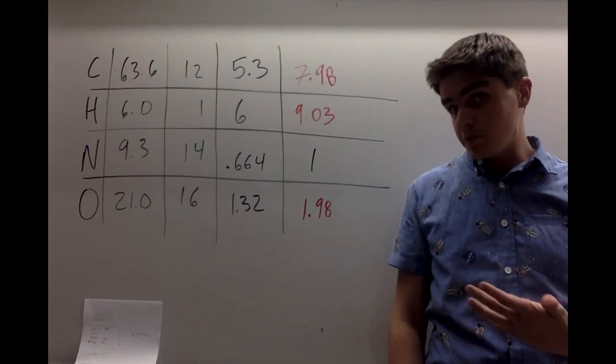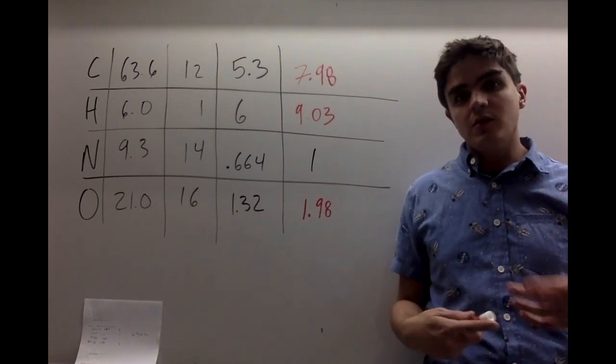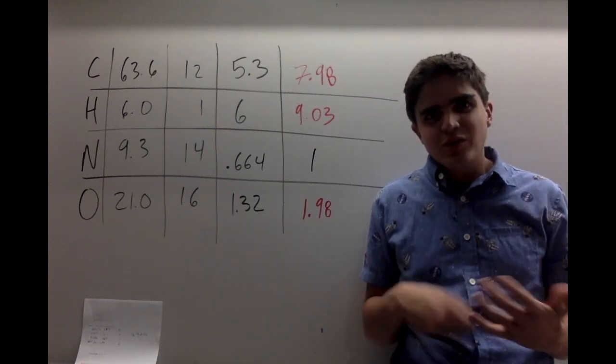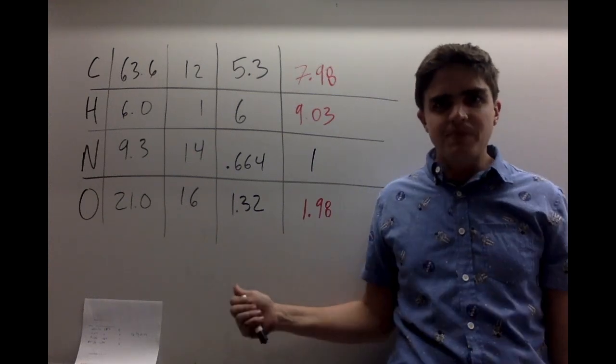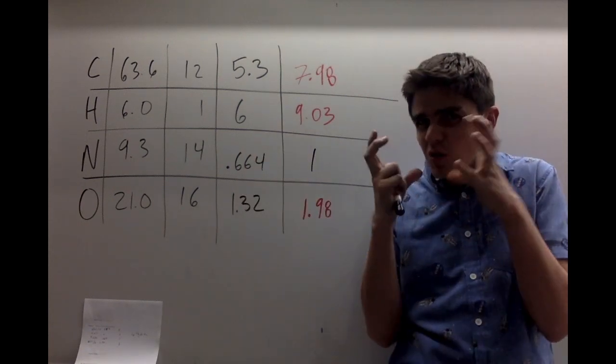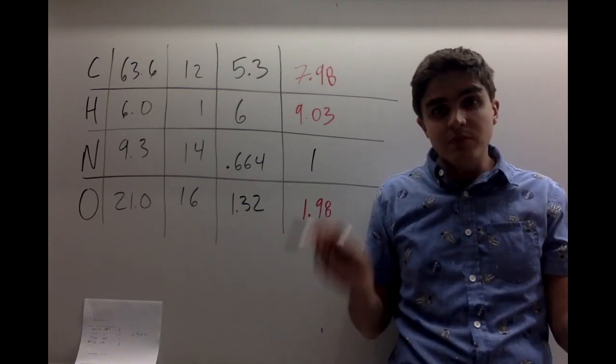So you likely got numbers like these. And the ones in red are probably the numbers you got. I want to point out that they're not all exactly right. But they're really, really close. This is basically 2, basically 9, basically 8. So I'm going to round them because those numbers are so close. They're up by a couple hundredths. So I'm going to take those and round them.